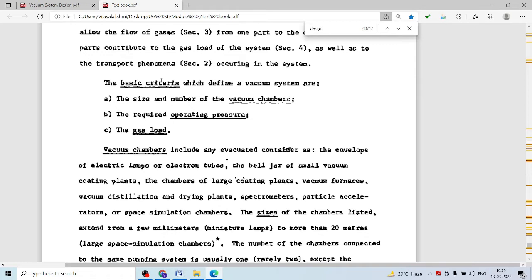Usually in a vacuum system we are using not only one chamber. More than one vacuum chamber is possible in order to create a perfect vacuum. So that is a criteria for designing a vacuum system.